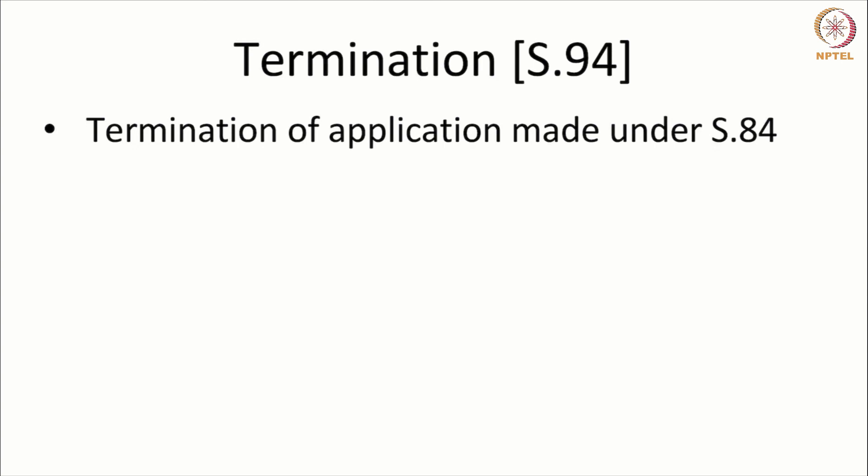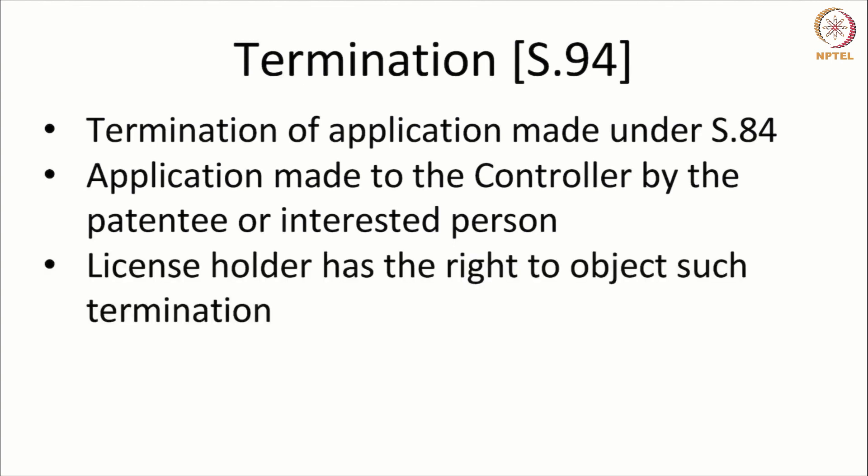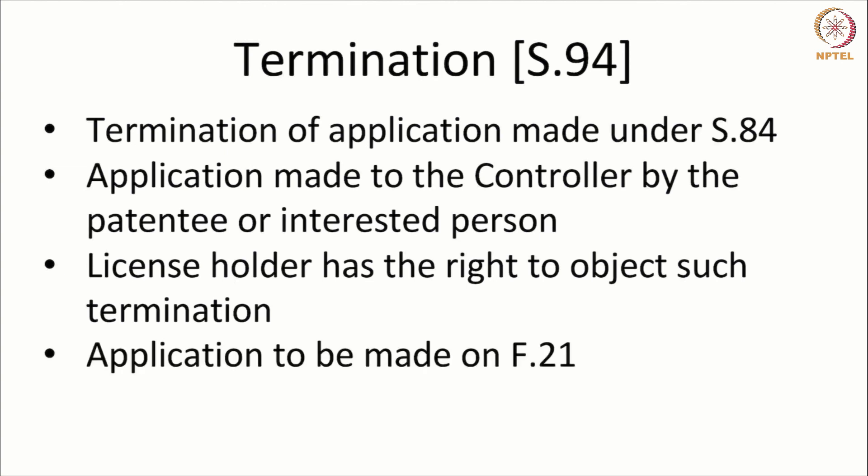Compulsory licenses granted can also be terminated. An application granted under section 84 can be terminated; the procedure is mentioned in section 94. The application shall be made to the controller by the patentee or the interested person, since the patentee is the one affected by the compulsory license. The license holder has the right to object to such termination, and the form to be used is Form 21 for making an application for termination.